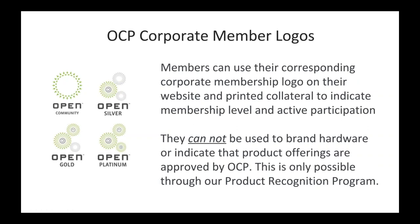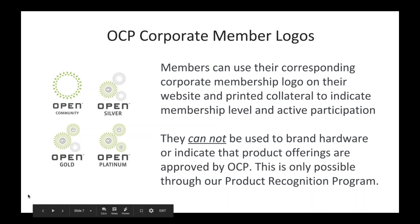The corporate member logos — you get these when you sign up as a corporate member. If you are a community member, you will get the logo on the left. If you are a higher-tiered member like Silver, Gold, or Platinum, this comes with it. When you sign your membership agreement, you will hear from Michael Schill from our membership department and he will send you the corporate logos. You can use your corresponding logo on your website, on your printed collateral. The only difference is you cannot use these logos on your hardware to indicate that a product has been approved by OCP. If you do want a product logo, please go through our product recognition program.